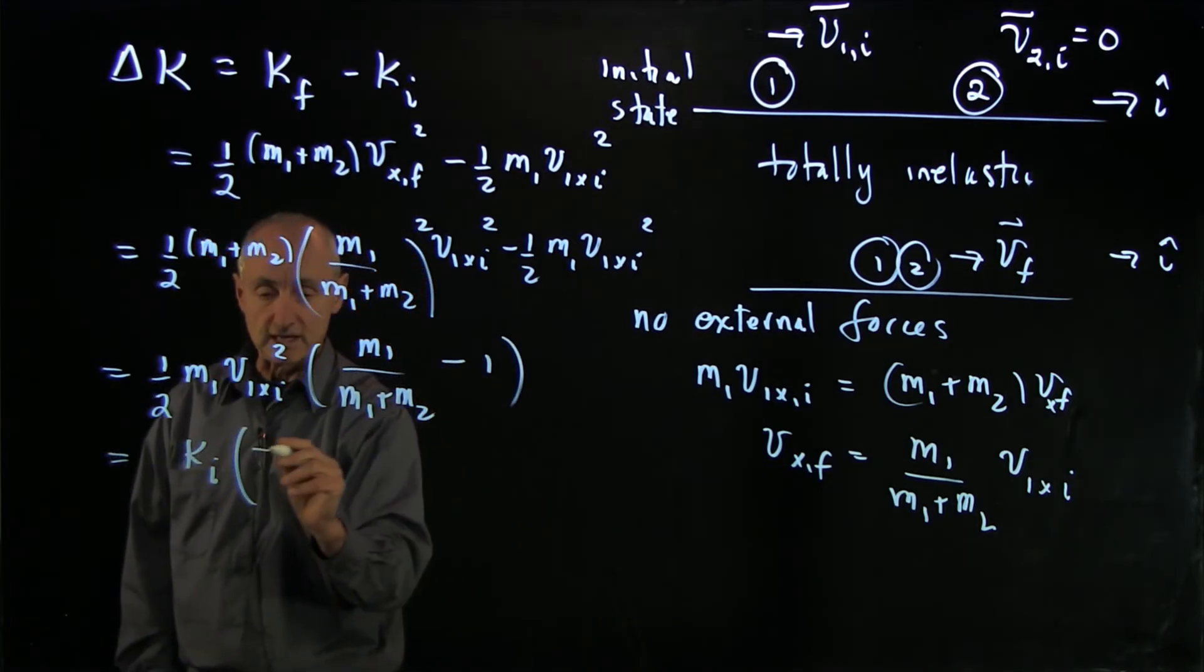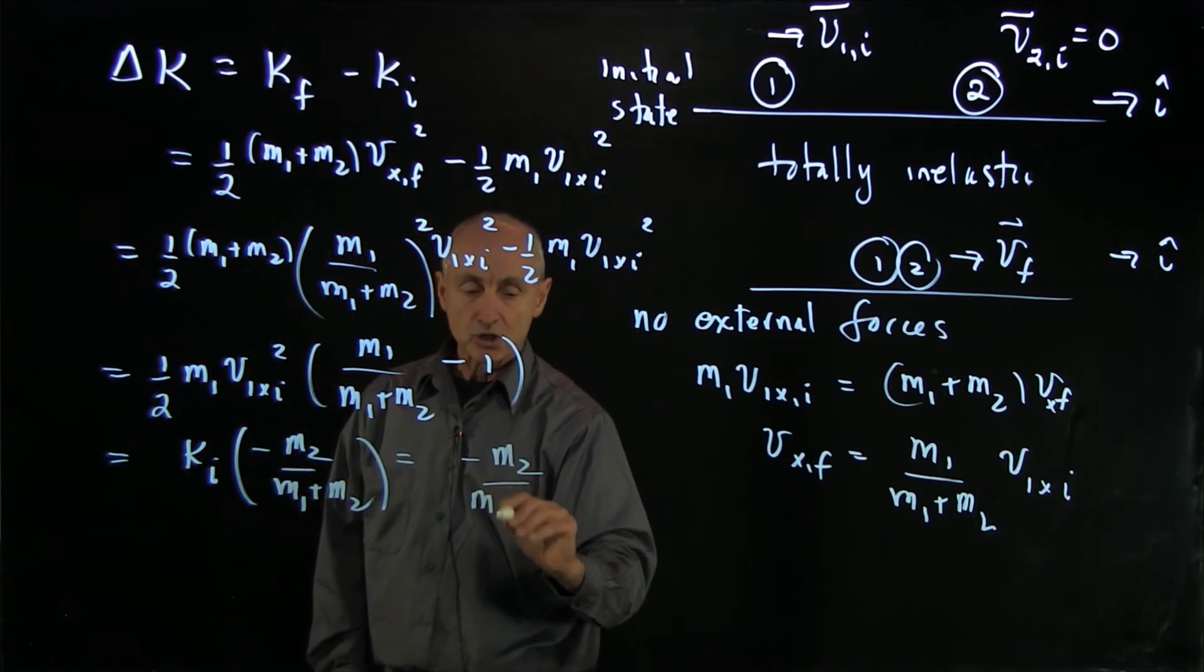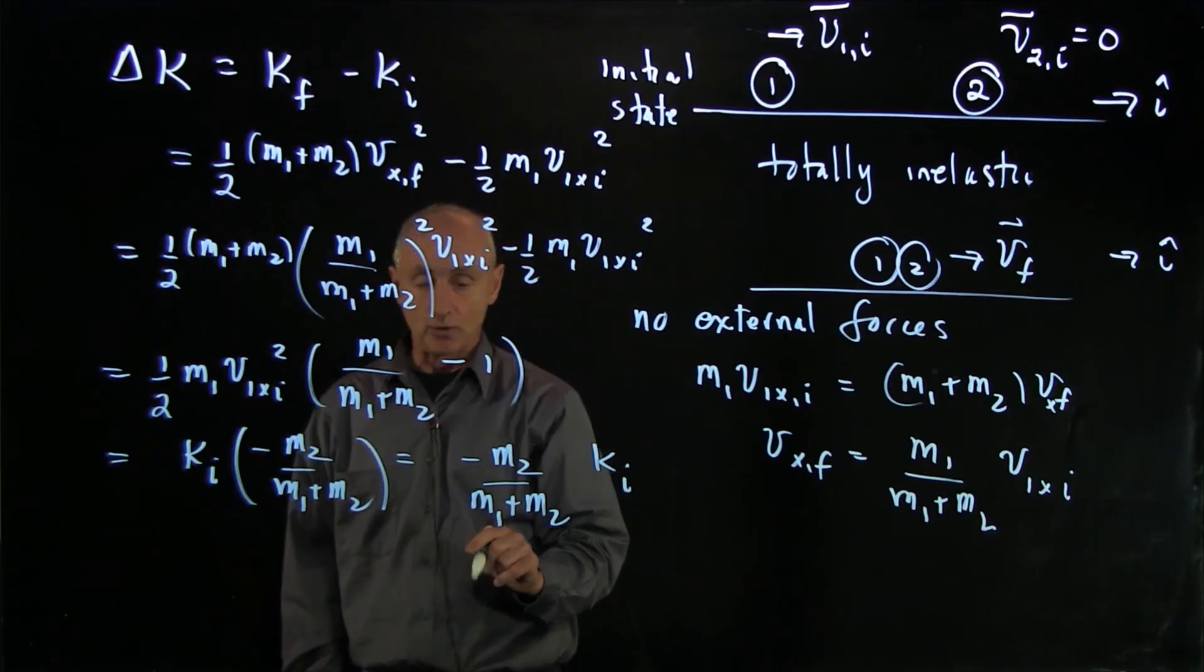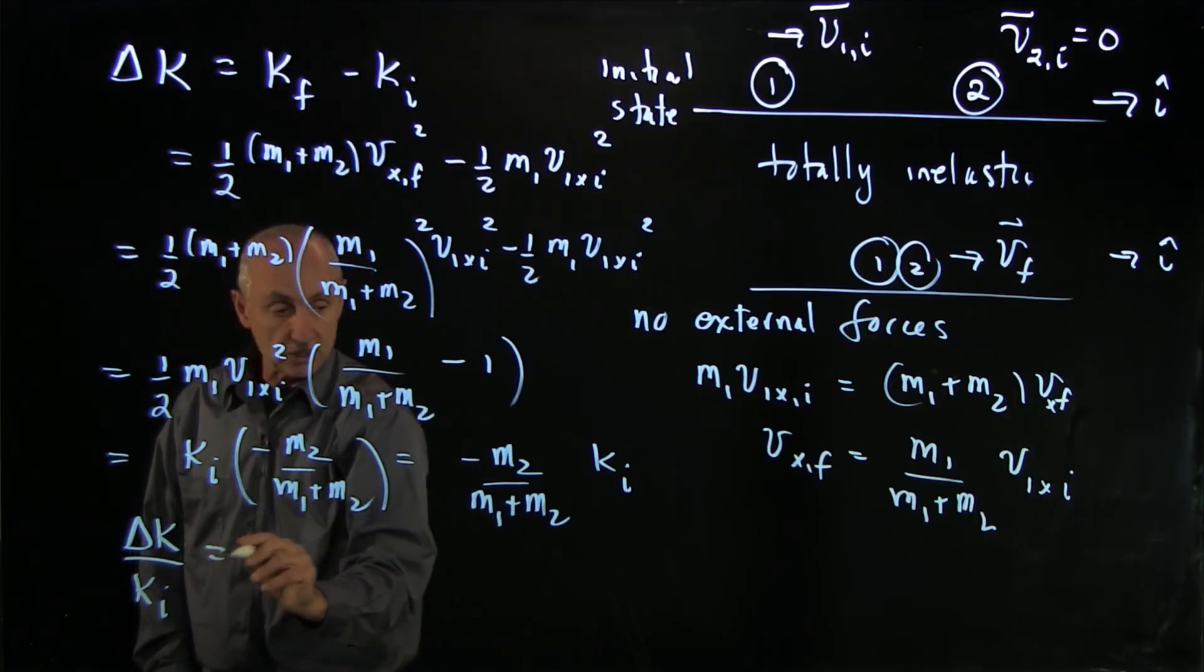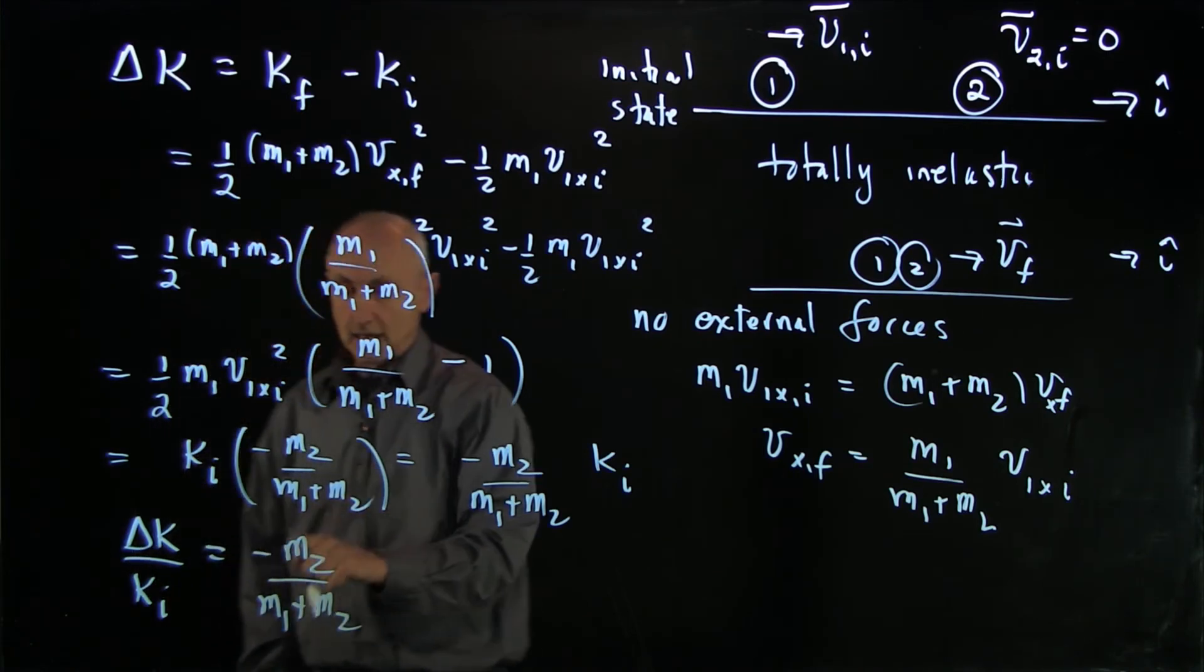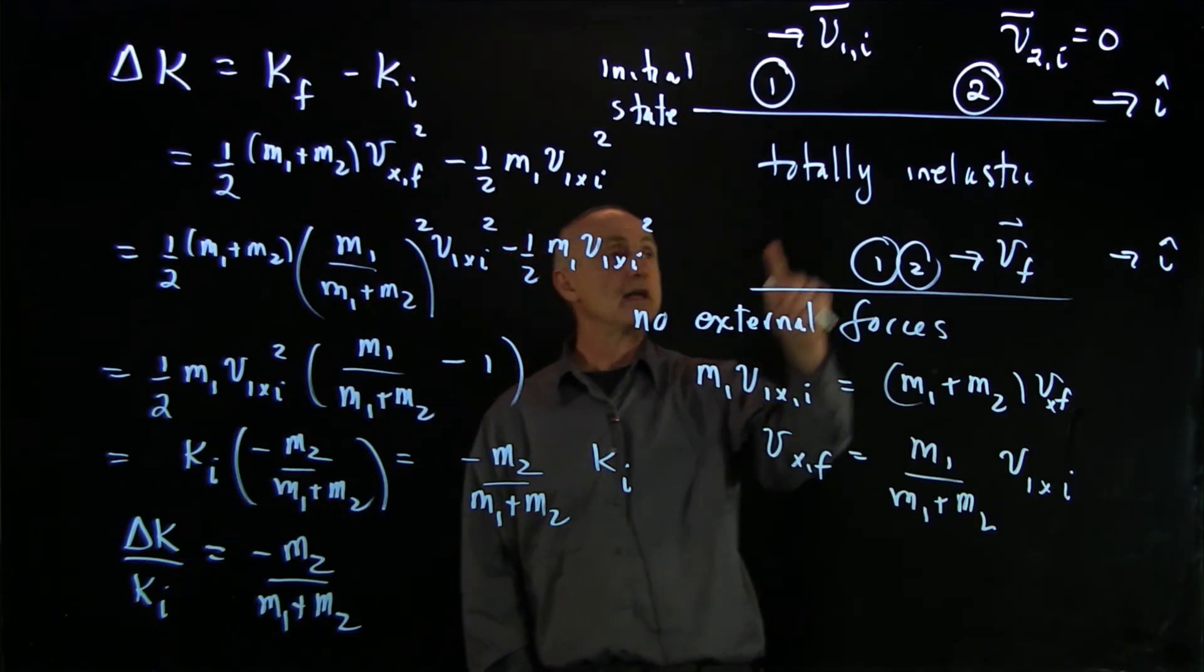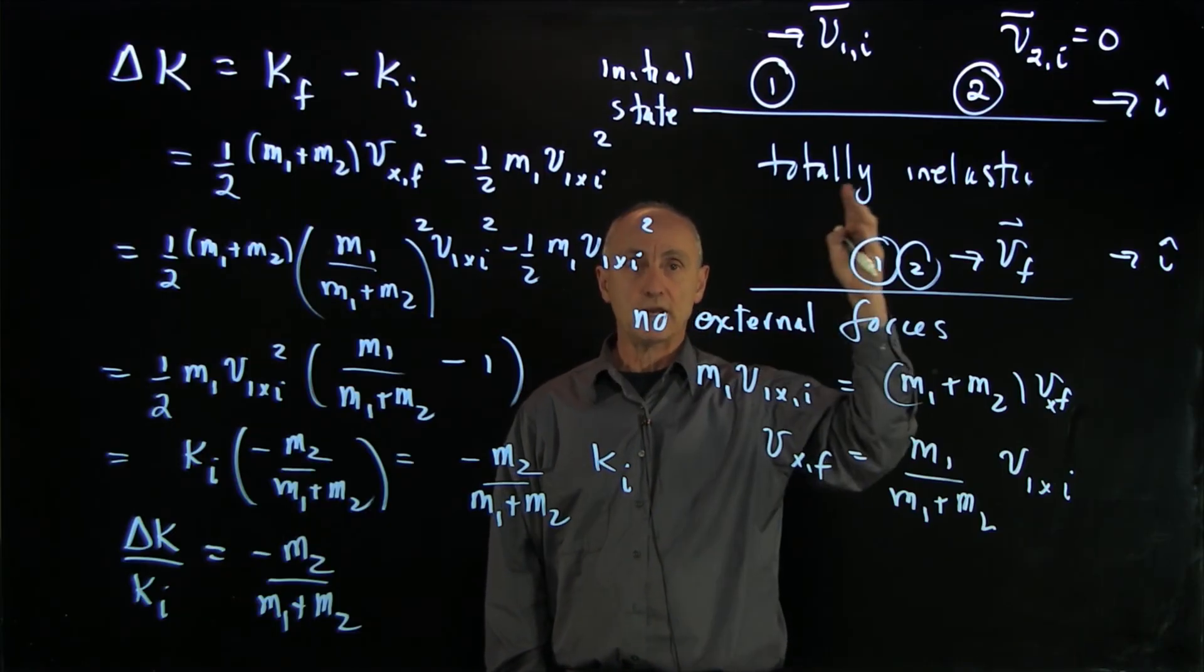And so what we see here is that the change in kinetic energy just depends on the initial kinetic energy and this mass ratio. In fact, if we asked ourselves what is the ratio of the loss of kinetic energy to the initial kinetic energy, that just depends on the mass ratio of our two objects. In particular, it should be a minus sign because the kinetic energy is decreasing. And so this is the fact, it's very transparent now, that in a totally inelastic collision, the kinetic energy is not constant. Where did that energy go? It went into other forms of energy.